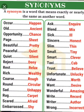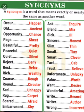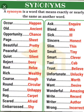Next is round — R-O-U-N-D — round means circular, C-I-R-C-U-L-A-R. Sad — S-A-D — means unhappy, U-N-H-A-P-P-Y. Rug — R-U-G — means carpet, C-A-R-P-E-T. Scared — S-C-A-R-E-D — we can write fear or fright. One more word: afraid — A-F-R-A-I-D — means scared. Embarrassed — E-M-B-A-R-R-A-S-S-E-D — means shy, S-H-Y.